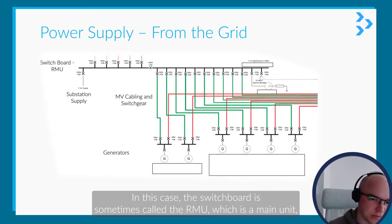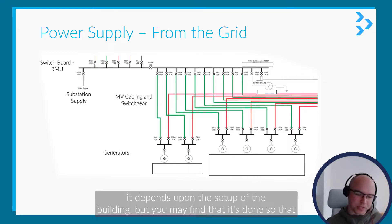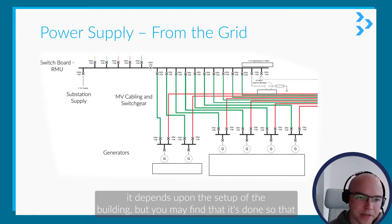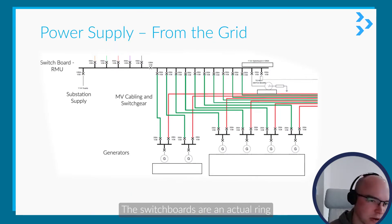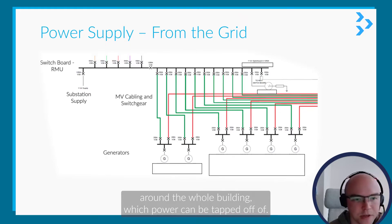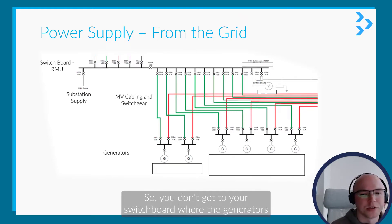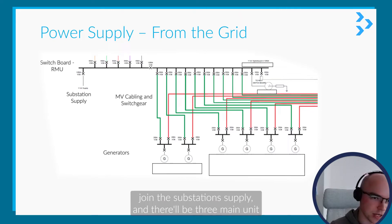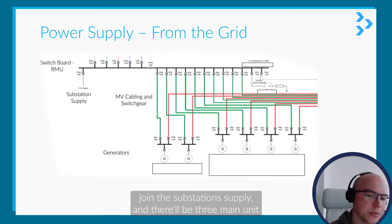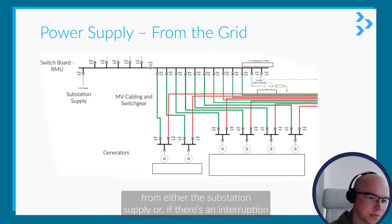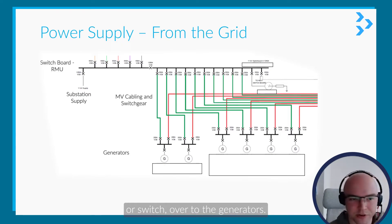The switchboard is sometimes called the RMU, which is a ring main unit. Depending on the setup of the building, it may be done in switchboards or as an actual ring around the whole building that power can be tapped off of. You then get to your switchboard where the generators join the substation supply, and the ring main unit can switch over from the substation supply or, if there's an interruption, switch over to the generators.